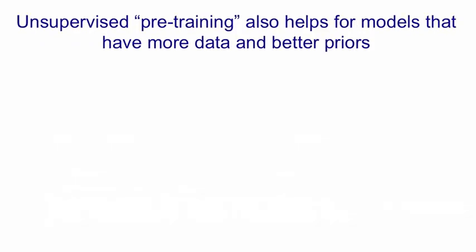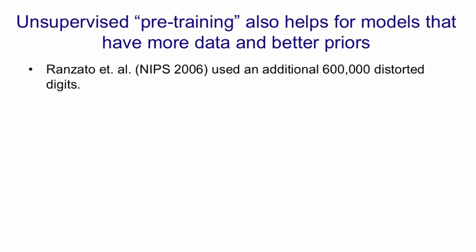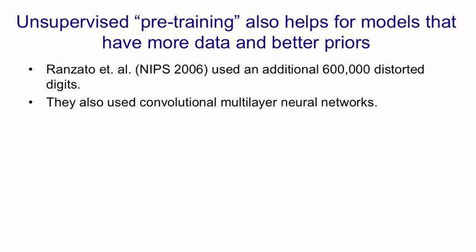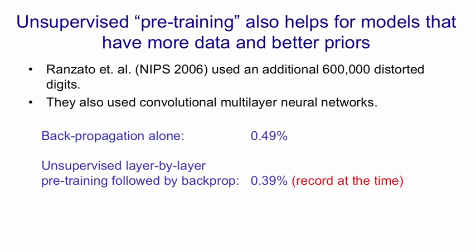Mark Ranzato, working in Yann LeCun's group, also showed using a slightly different pre-training method that pre-training helps for models with more data and better priors. They used an additional 60,000 distorted digit images and a convolutional multilayer neural network. With back propagation alone they managed to get down to 0.49%. When they did unsupervised layer-by-layer pre-training followed by back propagation, they got down to 0.39%, which at the time was a record.